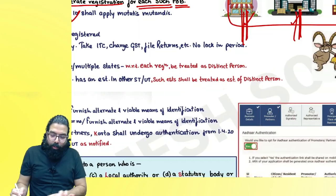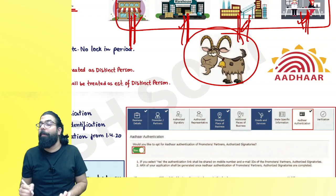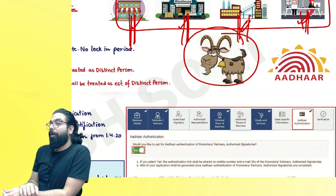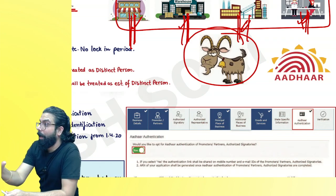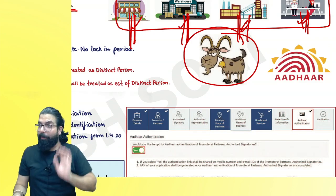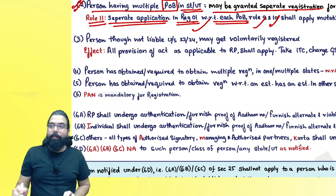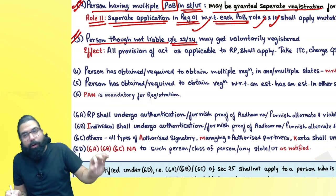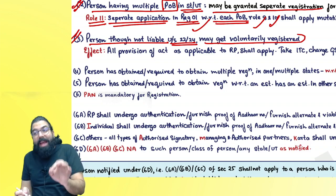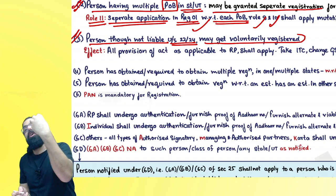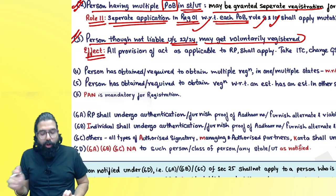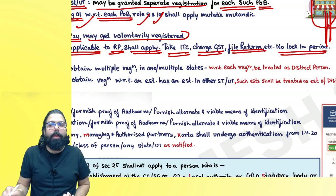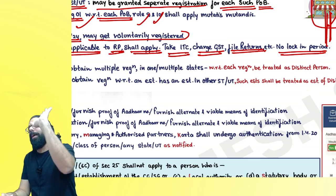Section 25(3) covers voluntary registration — a person not liable under section 22 or 24 who still wants to take registration. All provisions of the act applicable to a registered person shall apply to them — they can take ITC, charge GST, and file returns. There is no lock-in period; if after one month you want to cancel, you can. Section 25(4) and (5) talk about distinct persons.